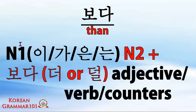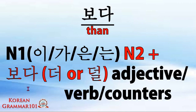Take notice that the first noun is attached with a subject marker or topic marker, and the second noun is attached with 보다 (buddha), which means 'than'. So you can put either 더 (do) for 'more than' or 덜 (dol) for 'less than', plus your adjective, verb, or counter.